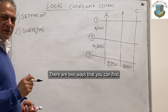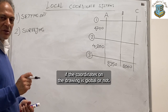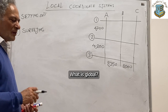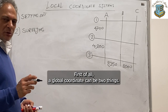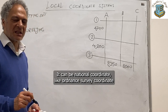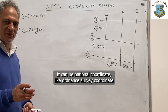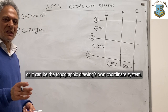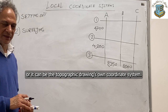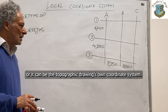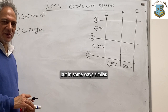There are two ways that you can find if a coordinate on the drawing is global or not. A global coordinate can be two things: it can be a national coordinate like an Ordnance Survey coordinate, or it can be the topographic drawer's own coordinate system. They are different but in some ways similar.